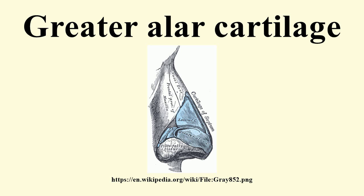Above, it is connected by fibrous tissue to the lateral cartilage and front part of the cartilage of the septum. Below, it falls short of the margin of the naris, the alar being completed by fatty and fibrous tissue covered by skin. In front, the greater alar cartilages are separated by a notch which corresponds with the apex of the nose.